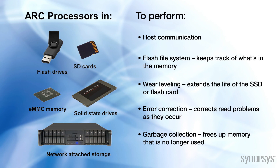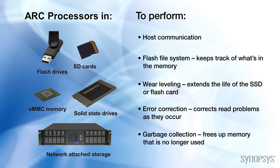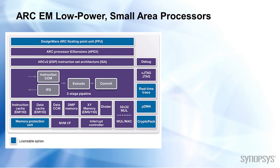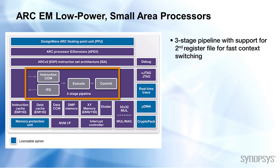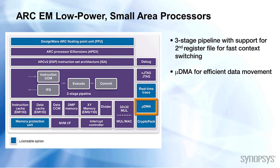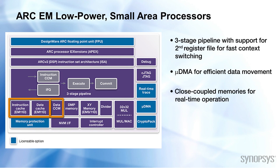ARC processors reduce system latency and power consumption and offer best-in-class code density, which is often very important in storage control designs. The ARC EM family is designed for very low power consumption and small silicon area with maximum performance efficiency. The family features the ARC V2 instruction set architecture and has a three-stage pipeline with support for a second register file for fast context switching and a DMA for efficient data movement. The EM family is available in versions with cache and those that only support close-coupled memories for real-time operation.